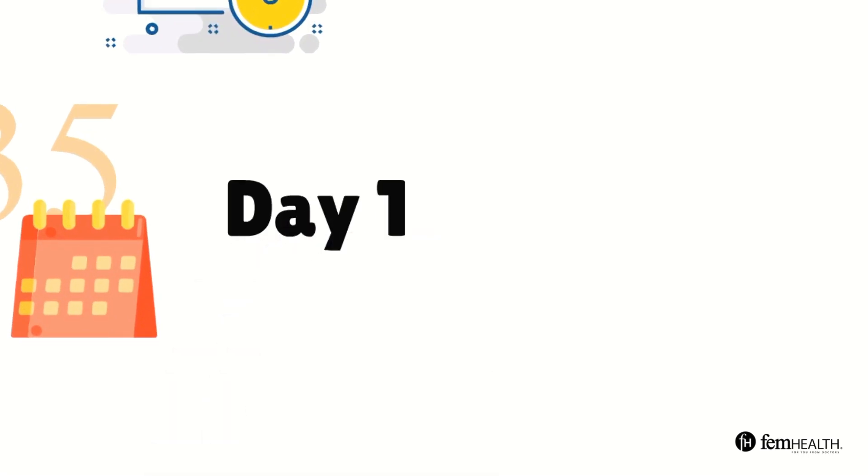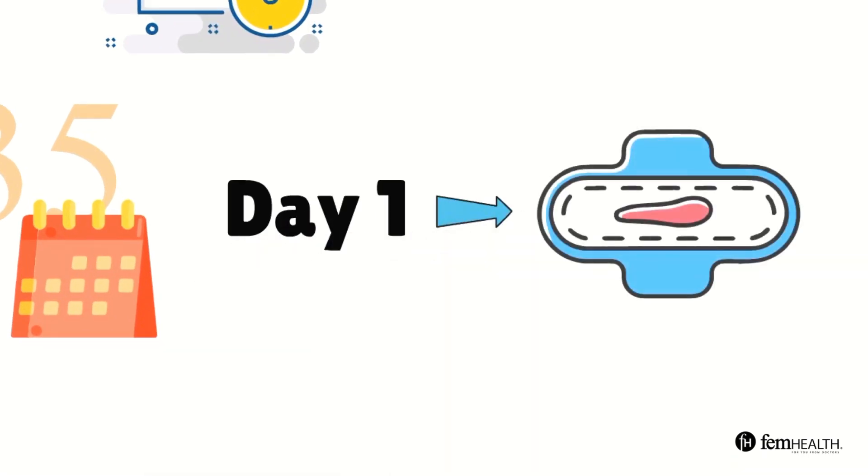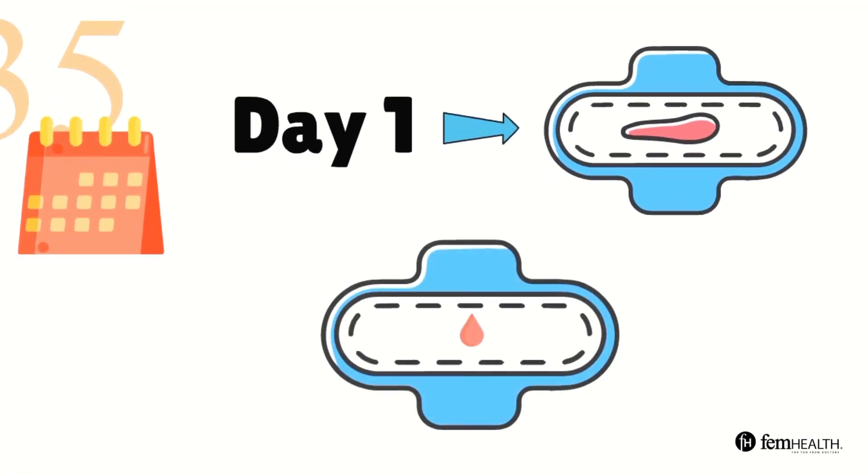Day one of your cycle is considered to be the first day of full bleeding. When a person is spotting this is not considered to be day one.